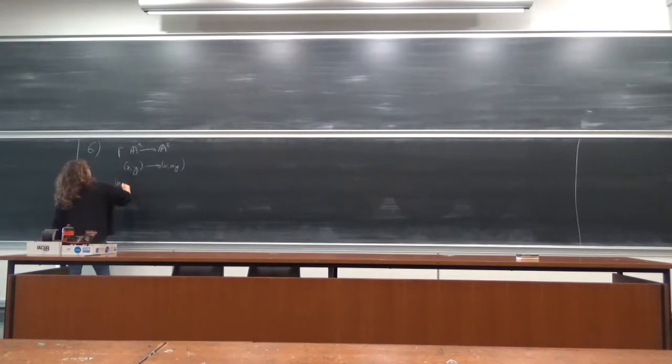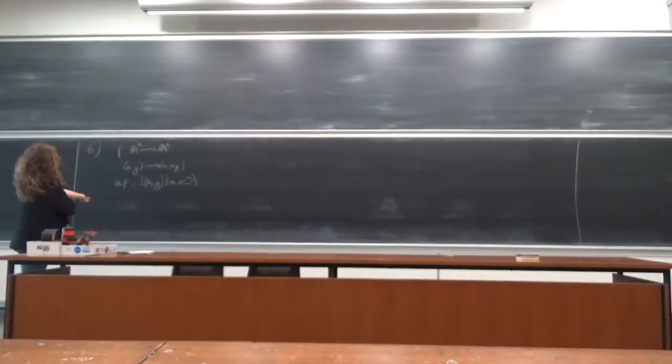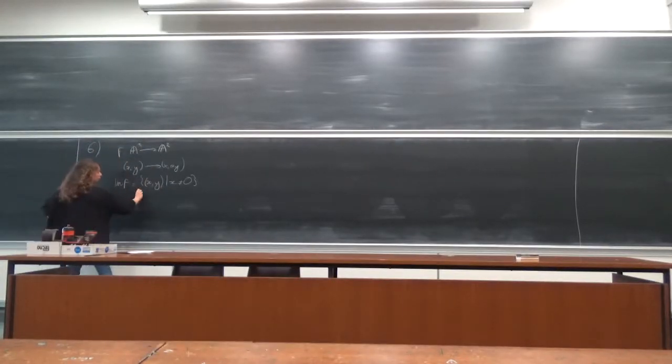So the image of f is going to be the set of all (x, y) with x different from zero, union the point (0, 0).